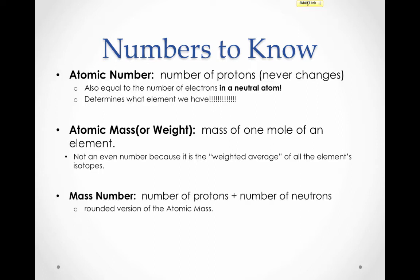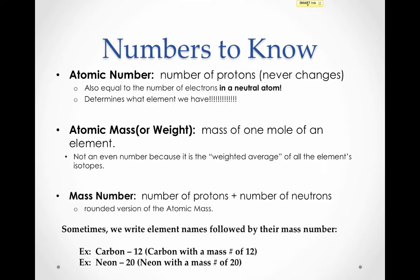Finally, there's the mass number, which is equal to the number of protons plus the number of neutrons in an atom. This is essentially a rounded version of the atomic mass, so it will always be a whole number. Sometimes it's convenient to write element names followed by their mass number, since it's possible for different atoms of the same element to have different mass numbers. So here, carbon-12 is carbon with a mass number of 12, and neon-20 is neon with a mass number of 20.